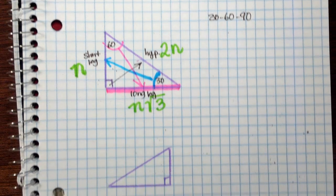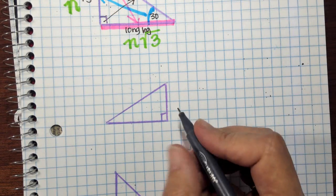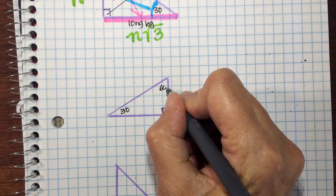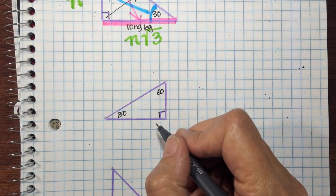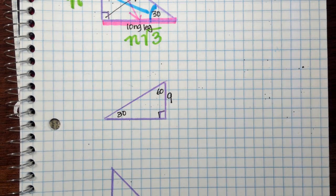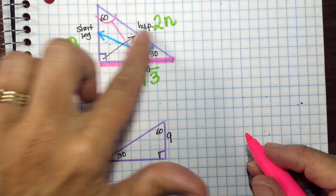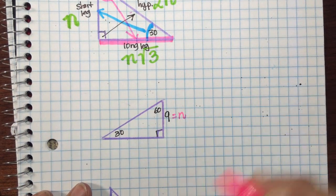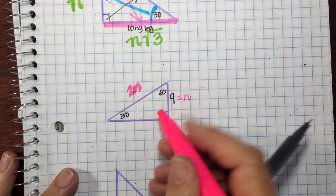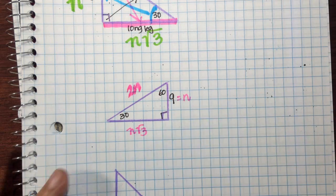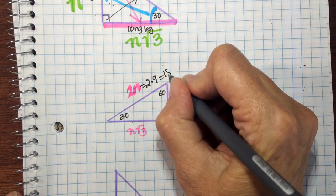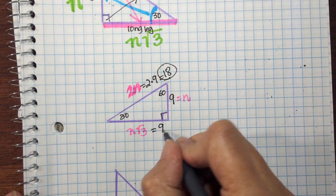Let's try one of these problems. If I know that this angle is 30 and this is a right angle, I automatically know I have a 30-60-90 triangle since all angles must add up to 180. The side across from 30 is my short leg. Suppose it's 9, so n equals 9. The hypotenuse is 2n, so 2 times 9 equals 18, and the long leg is n square root 3, so 9 square root 3.